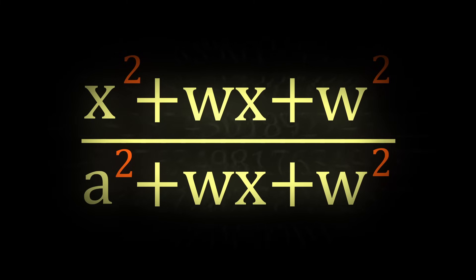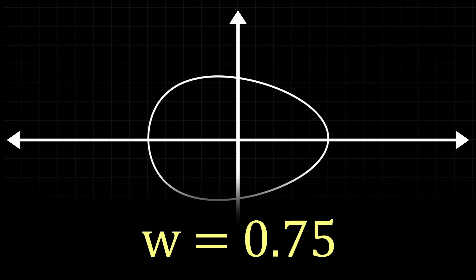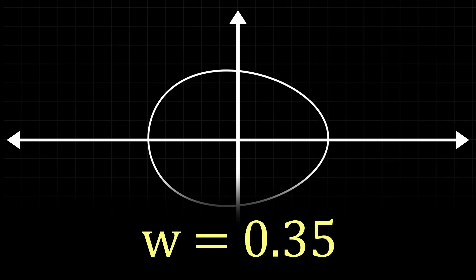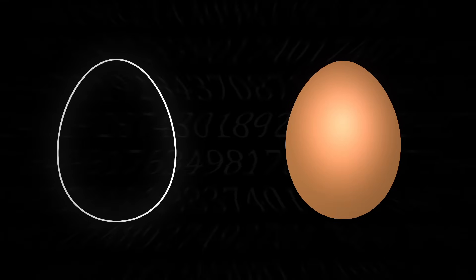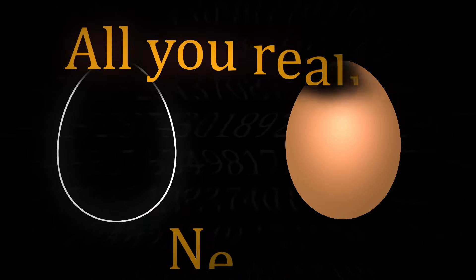The new shape we are left with is called an oval, also nicknamed fittingly, the egg curve. We can see how much this really resembles an egg now, and most of you say that this is all you really need.